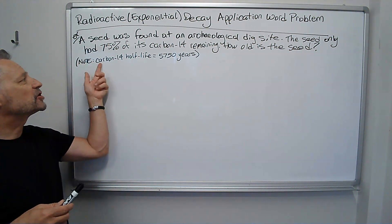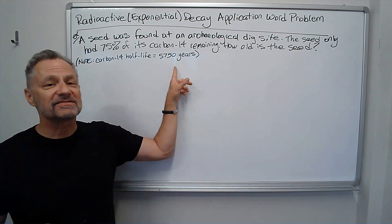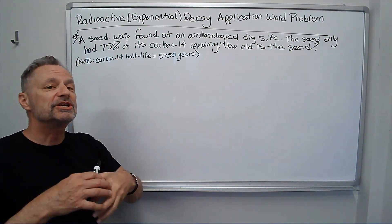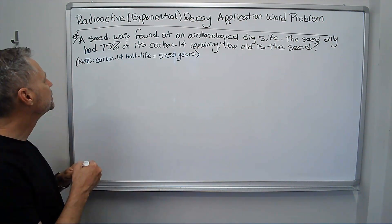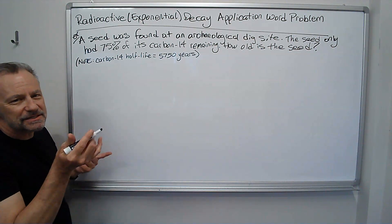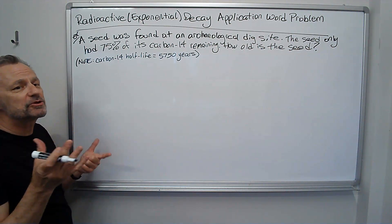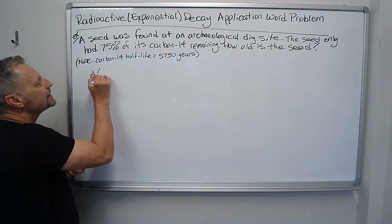We know we'll be given carbon-14 as a half-life for 5,750 years. We're going to use the general or generic exponential growth and decay formula, which says something along the lines, and your author or your teacher may use different letters, but it's A of t